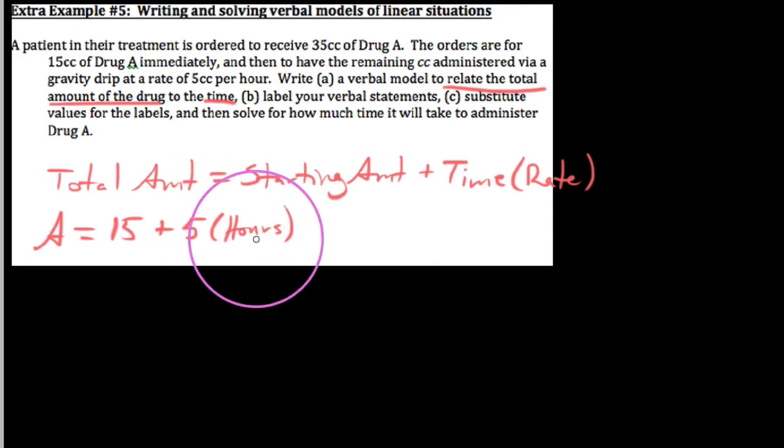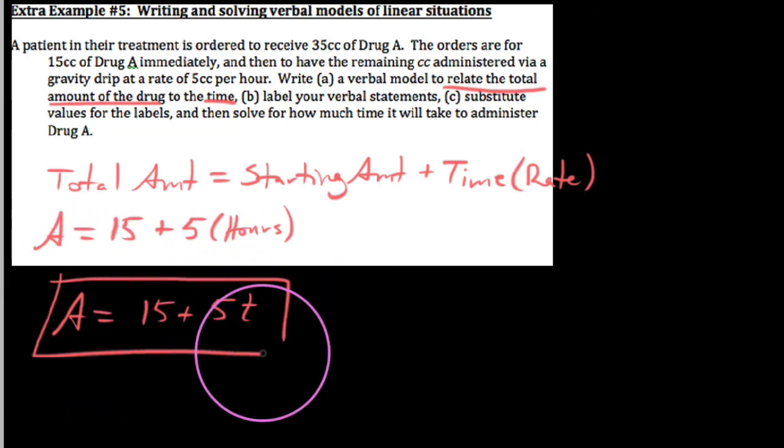15 plus 5 per hour times the number of hours. Substituting in letters, we could say the amount we have then is 15 plus 5 times t. We'll let t represent the number of hours. Essentially, this is what we have from our verbal model. This is how you would figure out the amount of the drug: the original 15 plus 5 per hour times however many hours.